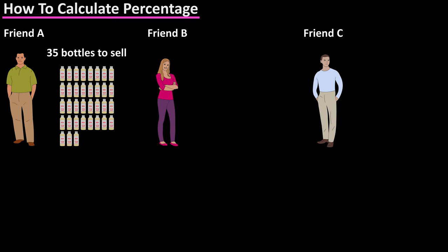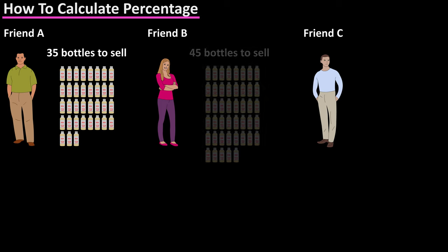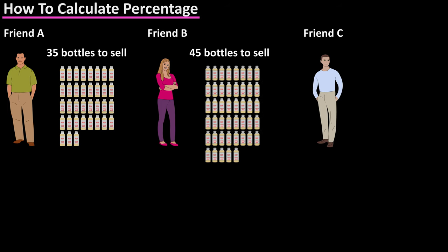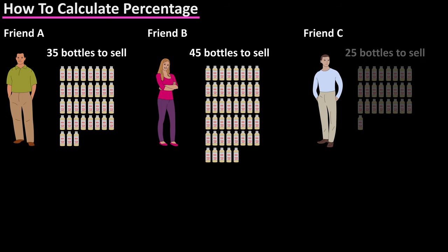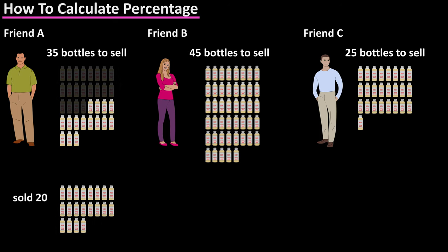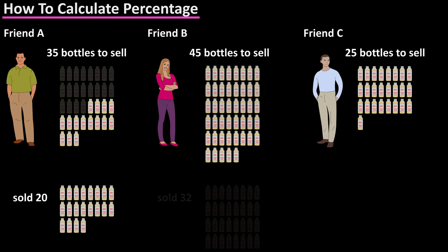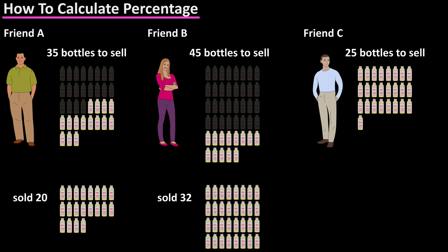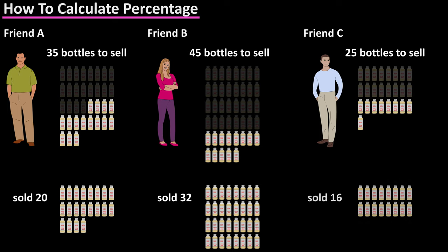For instance, let's say that you hire three of your friends to sell your energy drink. You give Friend A 35 bottles, Friend B 45 bottles, and Friend C 25 bottles to try and sell. A couple of days later, Friend A has sold 20 bottles, Friend B has sold 32 bottles, and Friend C has sold 16 bottles.